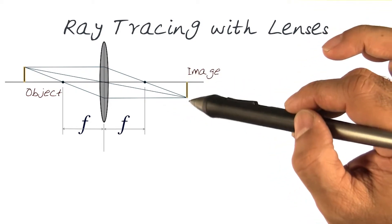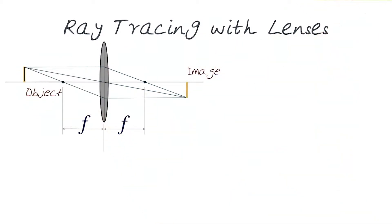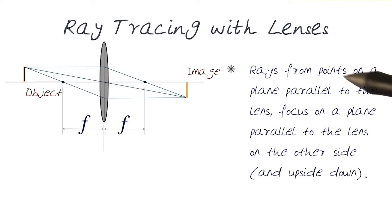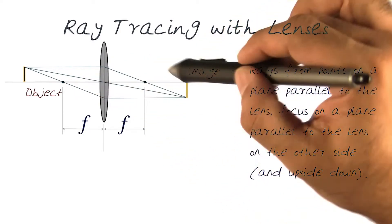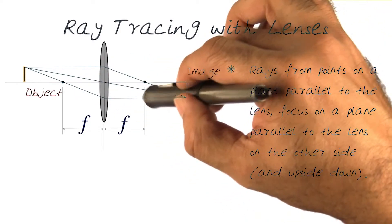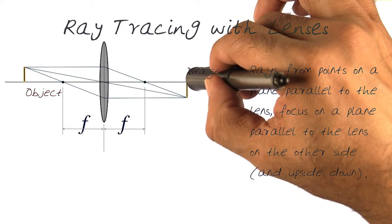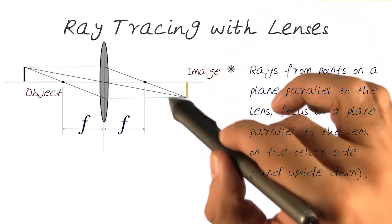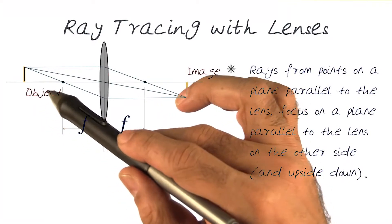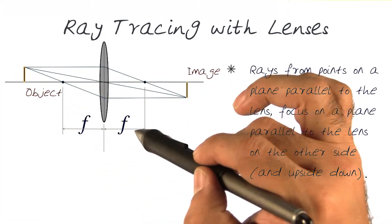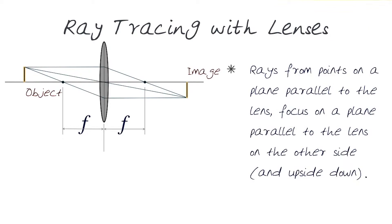So this is where the image point is for this object. Rays from points on a plane parallel to the lens focus on a point that is far away here. And we will actually now come up with an equation that basically connects the object distance from the lens to the focal length to where the image is formed.